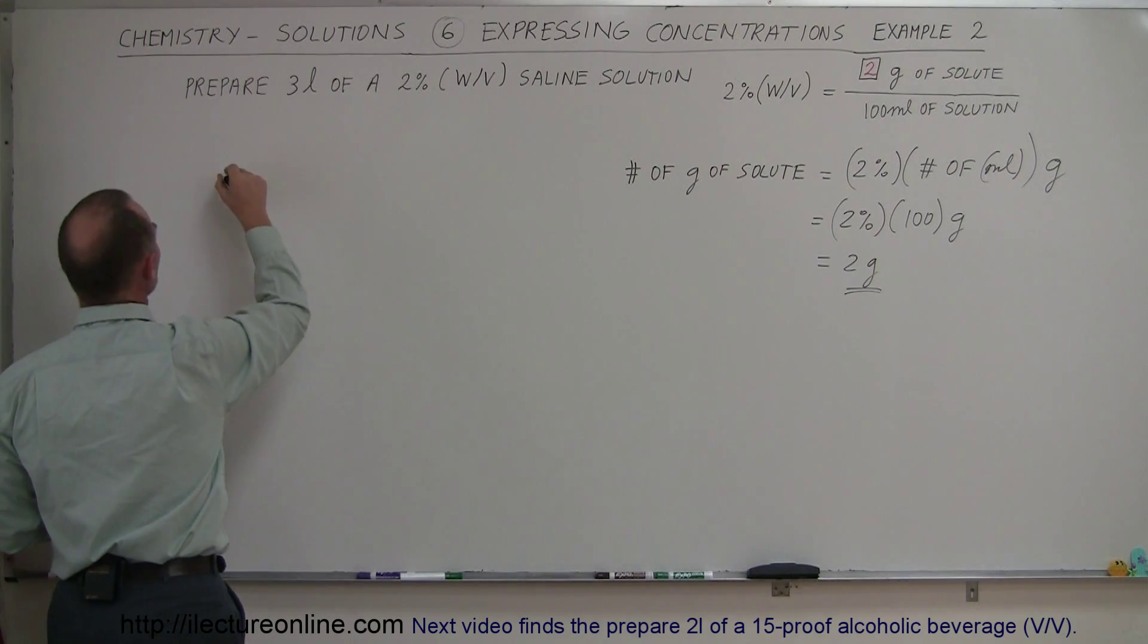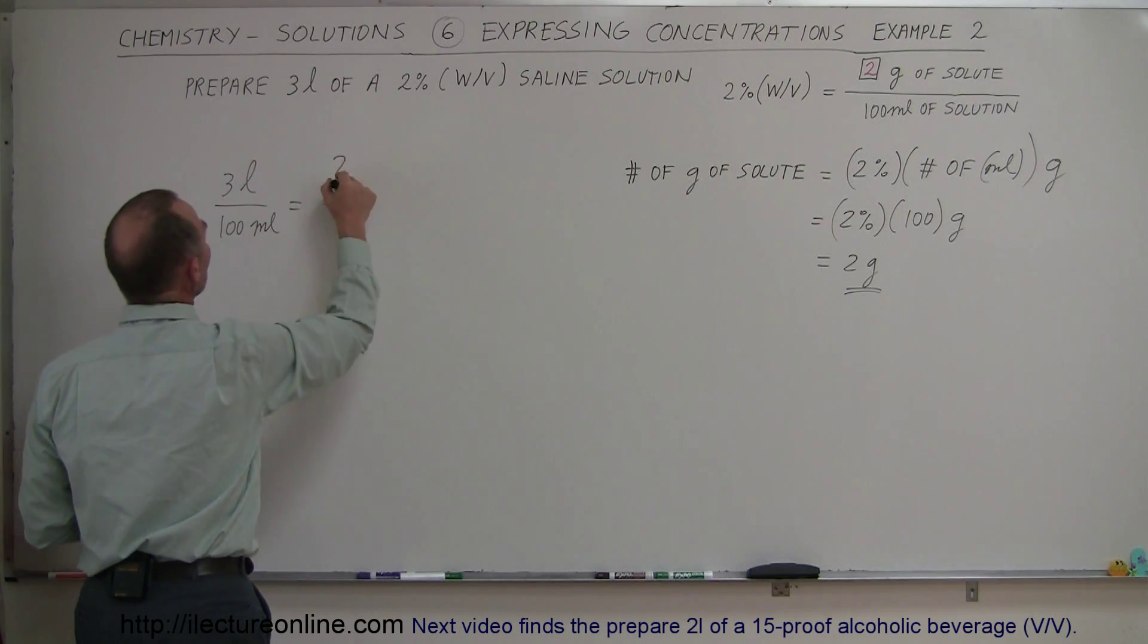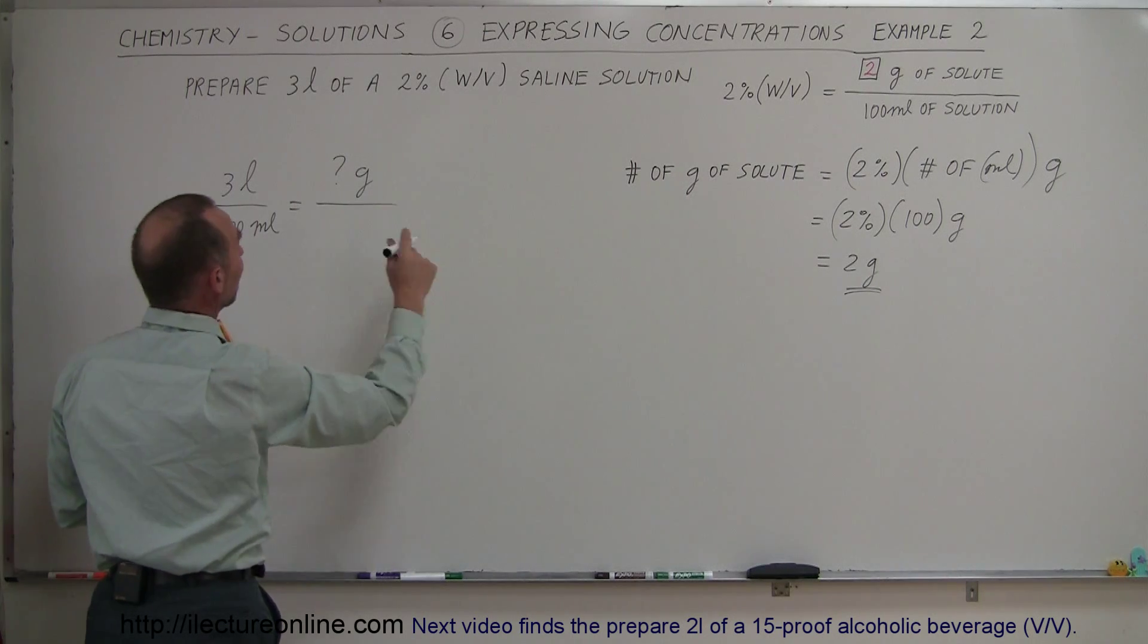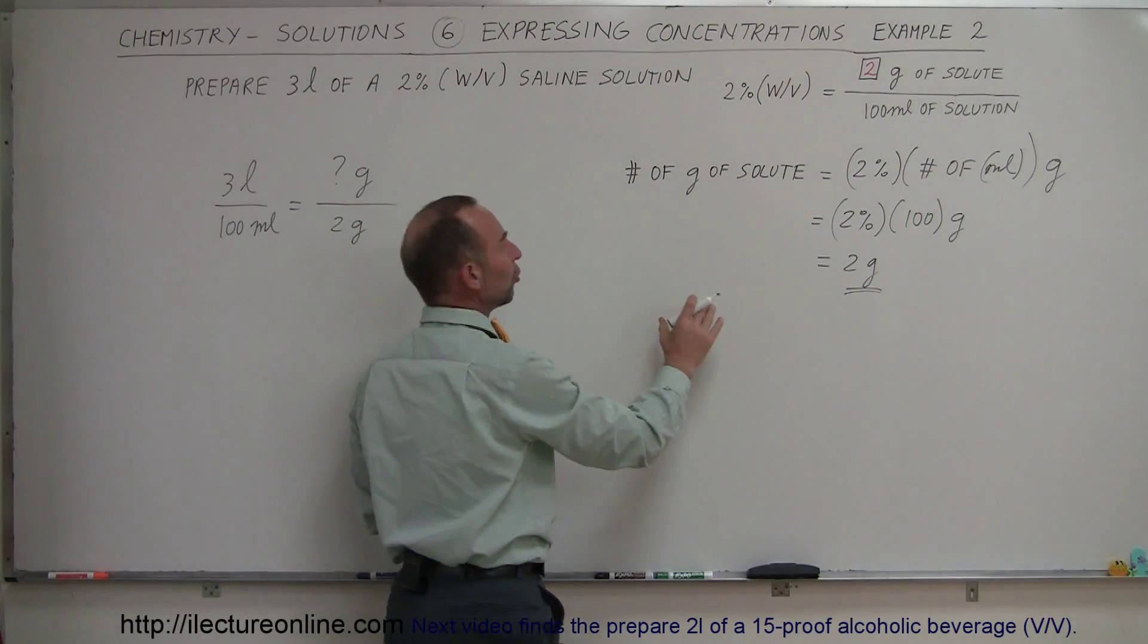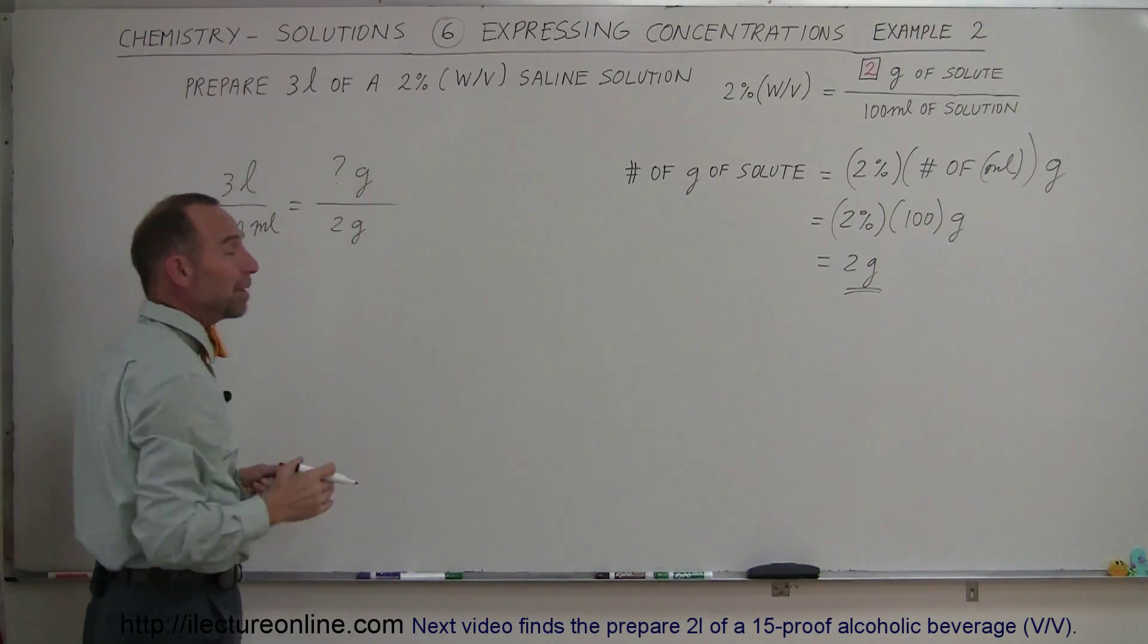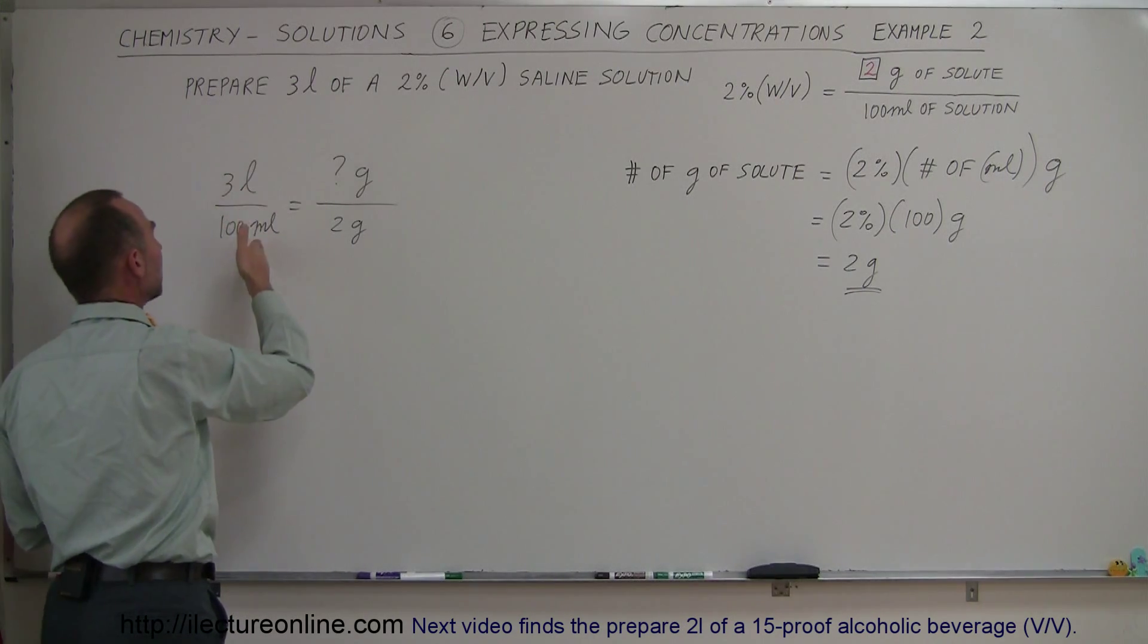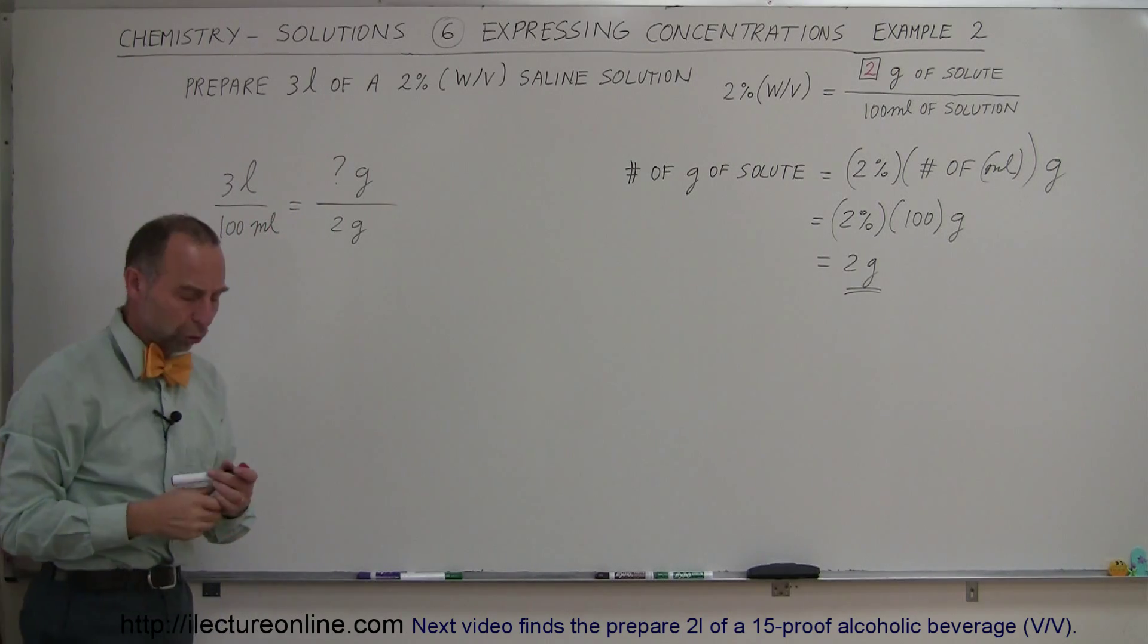So we can say that 3 liters to 100 milliliters must be the same ratio as the number of grams that we need to make that saline solution divided by the number of grams that we have, which is 2 grams right there. So to make a 2% solution, we need 2 grams. To make a 3-liter solution, how many more grams do we need? And it's the ratio. How much bigger is 3 liters compared to 100 milliliters? That's how many more grams we're going to need to make that 2% solution.